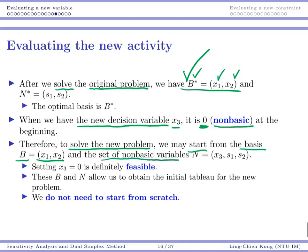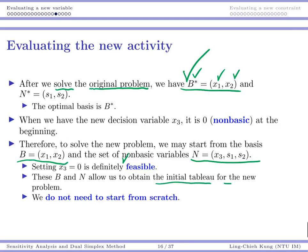My set of nonbasic variables should be expanded. Previously it was s1, s2, now it's x3, s1, s2. I can do this because setting x3 to be zero is of course feasible. Now this new B and N may allow me to obtain the initial tableau for the new problem, and then I don't need to go from the beginning.